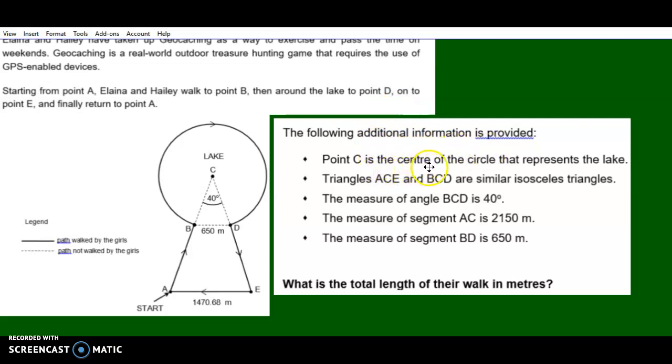Let's see what information is given here. Point C is the center of the circle that represents the lake. Triangles ACE and BCD are similar isosceles triangles.